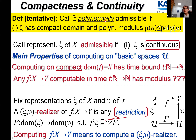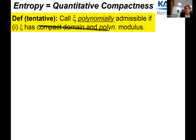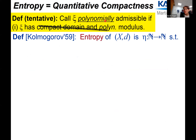However, unfortunately the second condition turns out to be unreasonable and unsuitable. I'm going to explain on the next slide why this is not a good definition, and introduce a revised definition. The reason we cannot expect a representation to have a polynomial modulus of continuity is because of entropy — entropy as introduced by Kolmogorov in 1939.